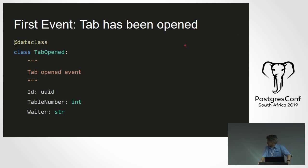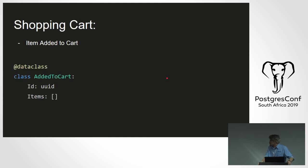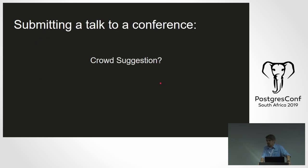Our first command: opening a tab. Simple — you just want to capture the wait staff and the table number; the rest will come as it comes. The event is basically the same. You just want to make sure you're capturing relevant data — don't capture the weather outside, that'll just bloat things. A classic alternative is the shopping cart — there's no 'open cart' command; the first action is immediately adding items.